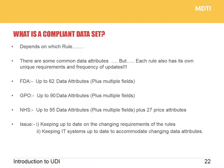I'd now like to spend a little more time on the actual dataset itself. The FDA has up to 62 data attributes. The American GPO is up to 90. The NHS is up to 95 data attributes plus 27 price attributes, making the NHS dataset by far the biggest. Within this dataset there are some common attributes like GTINs, but each rule has its own requirements and frequency of updates. Keeping abreast of requirements and keeping your data up to date is what we believe will be the main issue for most suppliers moving forward.